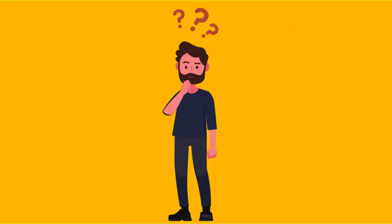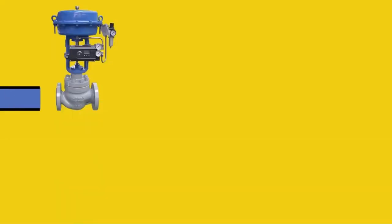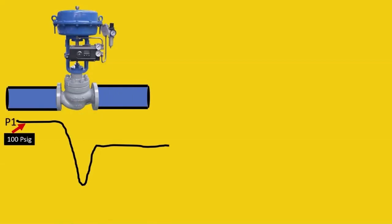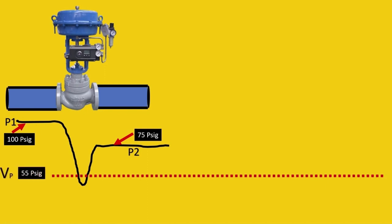Here's our valve and the pressure drop that happens across it. Let the pressure P1 be 100 psig and P2 after the pressure drop be 75 psig.